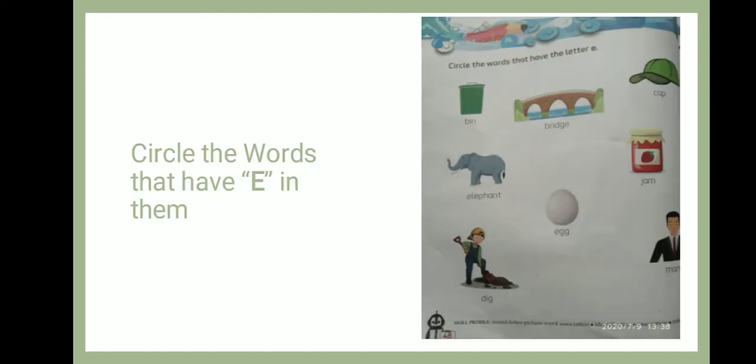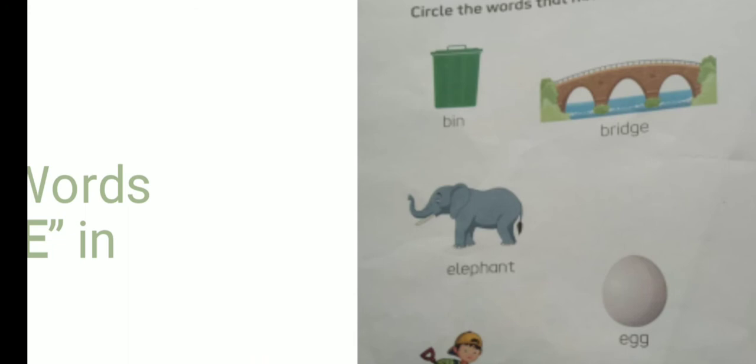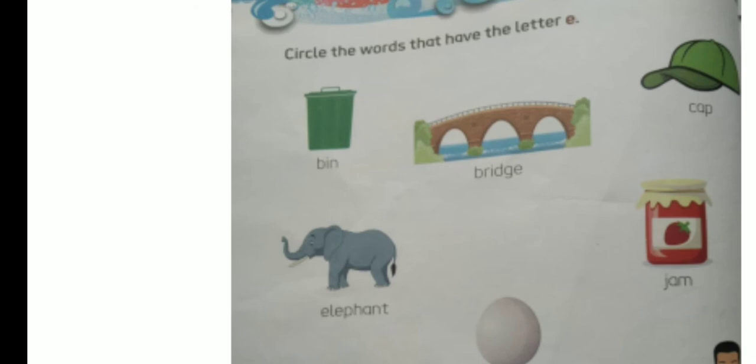Now kids, I have an exercise for you. Here we have to circle the words that have the letter E in them. So as you can see, there are many pictures. The first picture is bin — B, I, N — bin. So kids, we can't find letter E in this picture, so we will not circle it. Now come to the next: bridge — B, R, I, D, G, E. So kids, we find letter E in this picture, so we will circle it.